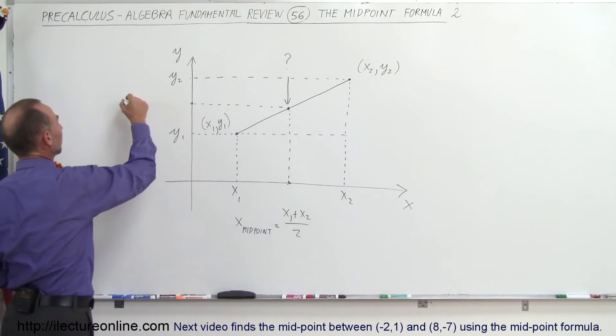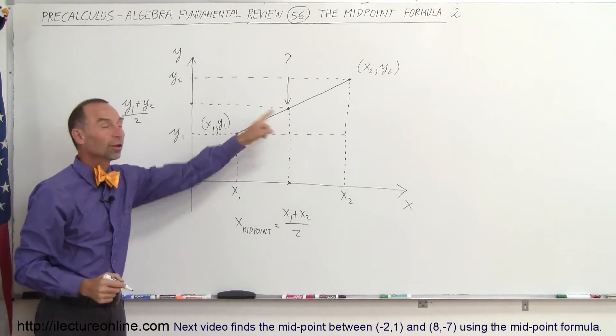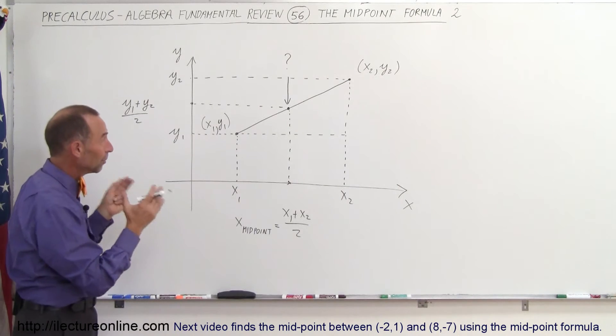If you want to find this point right here, we can say again, that's the sum of the two, Y1 plus Y2 divided by 2, which then becomes the Y coordinate of the midpoint.